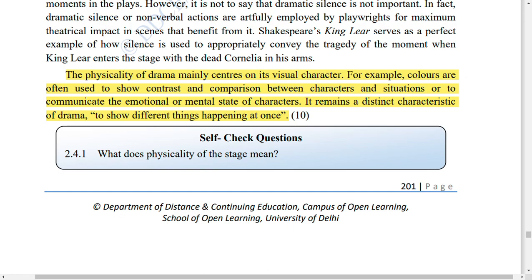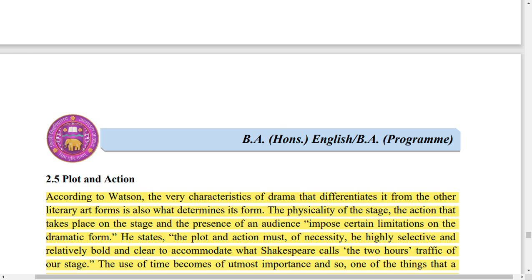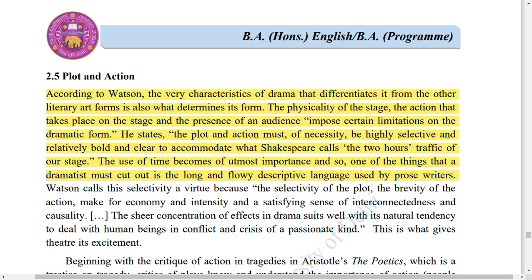The physicality of drama mainly centers on its visual characters. For example, color is often used to show contrast — white conveys peace, while red conveys courage, power, danger and fire. Every color has a deep impact on the viewer. When choosing actors and costumes, color combinations are used to visually signal character traits — one character can be dressed brightly to show peace, another darkly to show danger or strength.